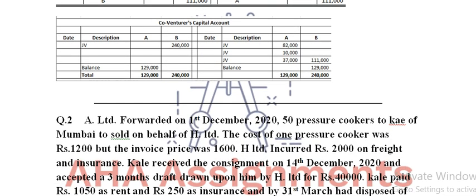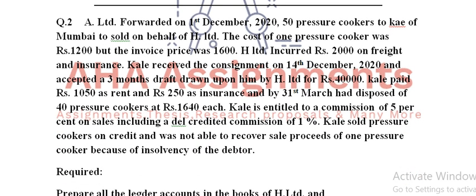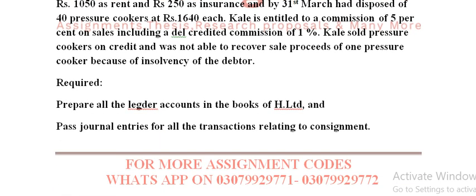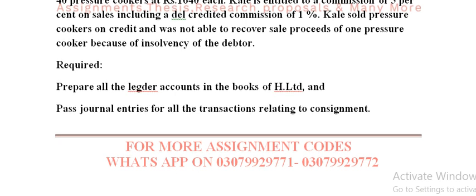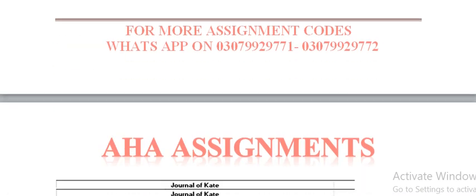This is question number 2. A Limited forwarded on 1st December 2020 — 50 pressure cookers to KE of Mumbai to be sold on behalf of A Limited. All the remaining requirements are given. Aap is question ko thoroughly padh lena chahiye. Aapne is question me ledger prepare karna hai — A Limited ka — and again general entries bhi pass karni hai.